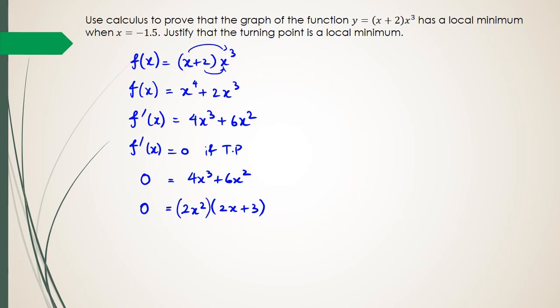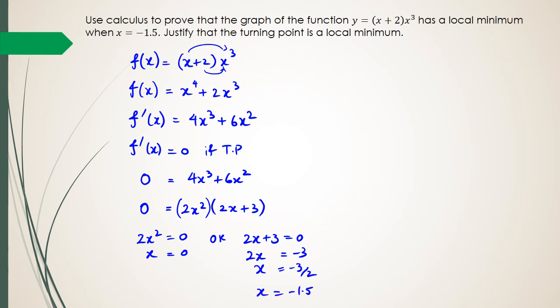At this point you have either the left-hand bracket equal to zero or the right-hand bracket equal to zero. When 2x squared equals zero, we get x equals zero. Or when 2x plus 3 equals zero, rearranging gives 2x equals negative 3, so x equals negative 3 over 2, which is x equals negative 1.5.